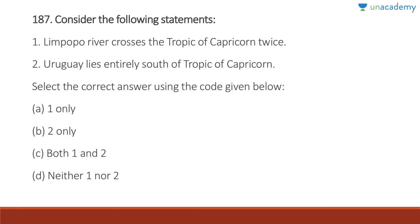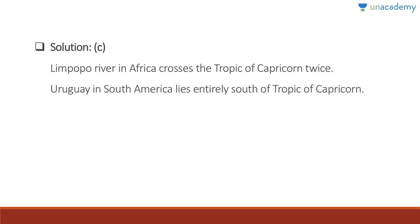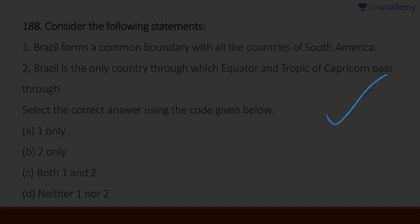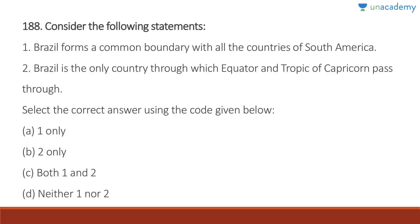Question 187: Limpopo River crosses the Tropic of Capricorn twice — correct. Uruguay in South America lies entirely south of the Tropic of Capricorn — also correct. Answer is C, both one and two. The Limpopo River in Africa crosses the Tropic of Capricorn twice, and Uruguay lies entirely south of the Tropic of Capricorn.